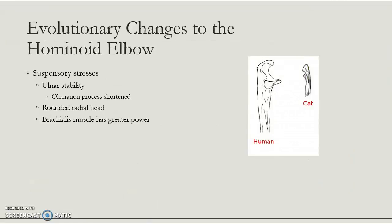We also see changes in the elbow. You can fully extend your elbow, but a cat can't — even a macaque can't. We actually have a shorter olecranon process than a quadruped has. The olecranon process is the most proximal portion of the ulna, and on a cat it's very similar to a monkey's. Ours is much shorter, so you can extend it — it goes into the olecranon fossa on the humerus, which has to contain the whole olecranon process, which is what allows your arm to extend. We also have a more rounded radial head on the radius, and in terms of soft tissue, our brachialis muscle has greater power — though you wouldn't be tested on that; you will be tested on the skeletal anatomy.